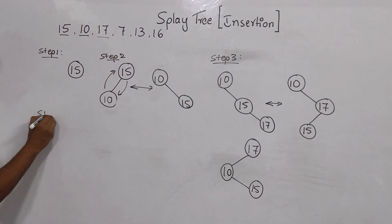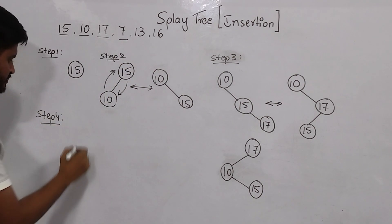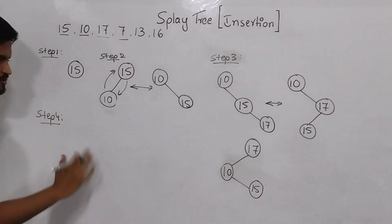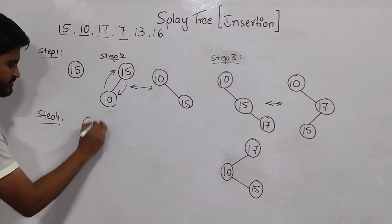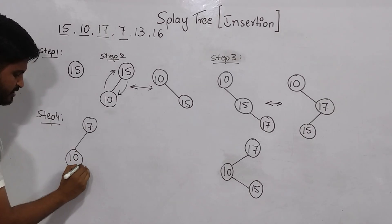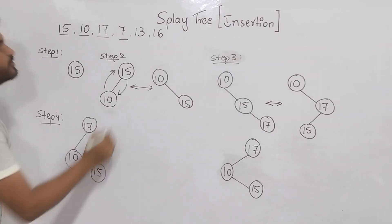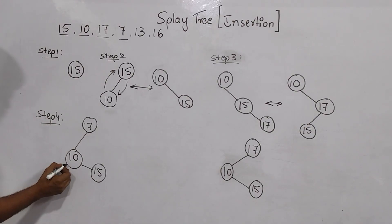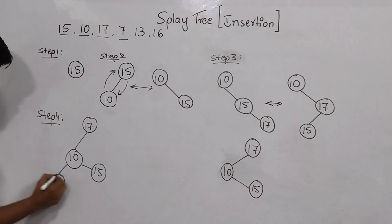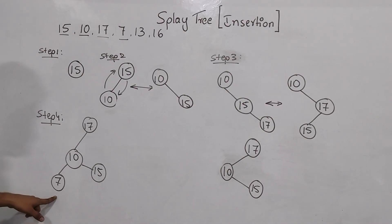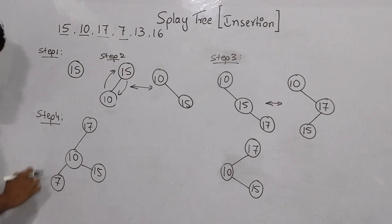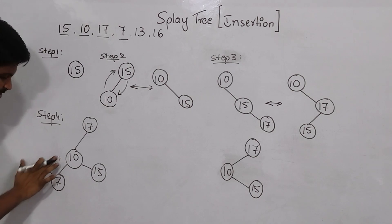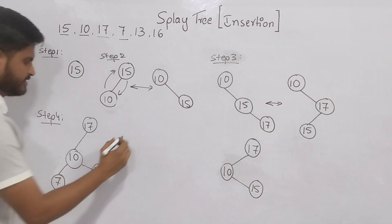Now let's move to step 4. I want to insert 7. Copying the last tree: 17 at root, 10 to the left, 15 to the right of 10. I want to insert 7. 7 is less than 17 and less than 10, so I write it to the left of 10. Now I must make this inserted node the root, so I go one level up and exchange 10 and 7.